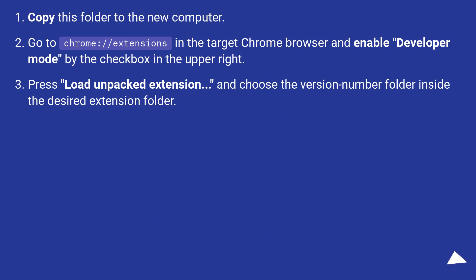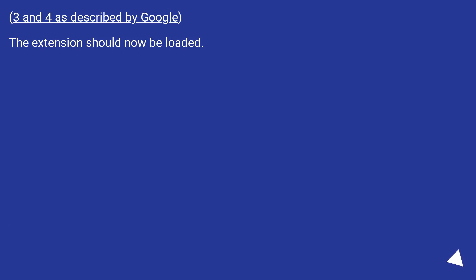Go to chrome://extensions in the target Chrome browser and enable developer mode via the checkbox in the upper right. Press 'Load unpacked extension' and choose the version number folder inside the desired extension folder. The extension should now be loaded.